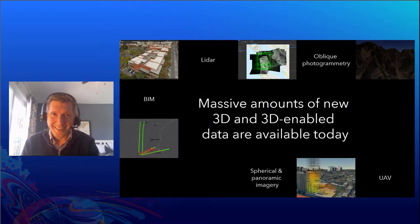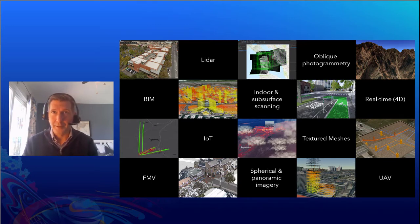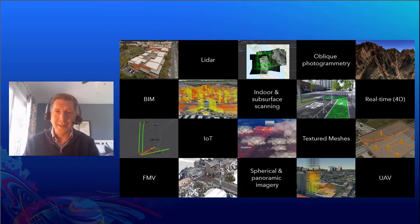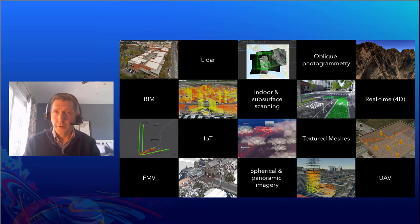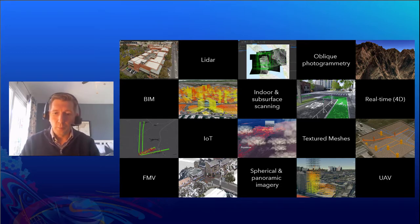3D GIS has really been driven by momentum from a variety of different data sources and capture techniques that have exploded over the last couple of years. We've seen reality capture and design and engineering data, as well as an explosion in new 3D data types. Whether it be LiDAR from drones, trucks, or backpacks, or photogrammetric textured meshes on a global level, there are a lot of different pipelines for the production of new 3D data types.